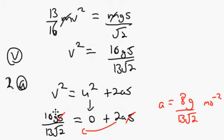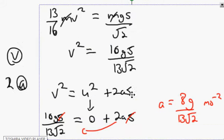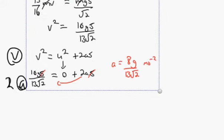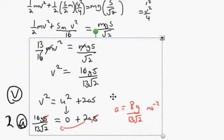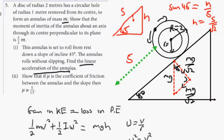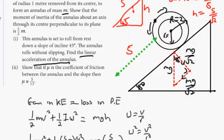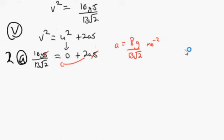That is our acceleration. The next part of the question asks for the coefficient of friction. It says: show that mu, the coefficient of friction between the annulus and slope, must be greater than or equal to 5/13. Friction opposes acceleration.